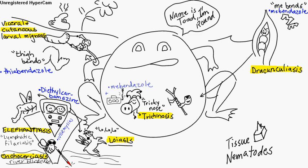Loiasis — you've got this deer fly. It's transmitted by a mango fly or a deer fly. No nodule, therefore it's migrating.